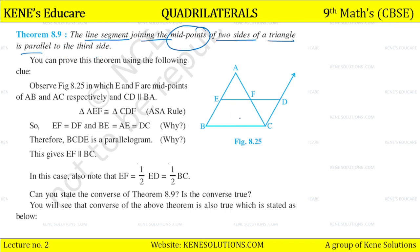You can prove this theorem using the following clue. Observe this diagram. EF will be extended to D and BC will be equal. C will be extended to EB as parallel. E and F are the midpoints of AB and AC respectively, and CD is parallel to BA.